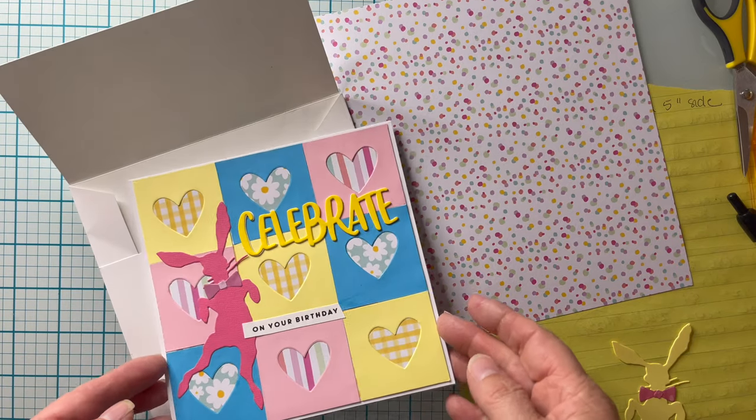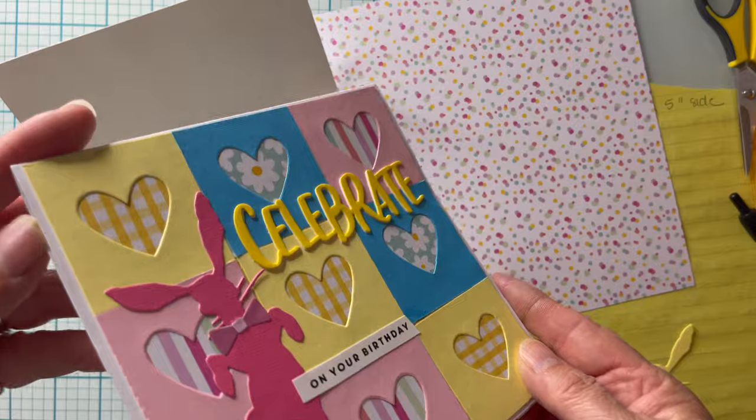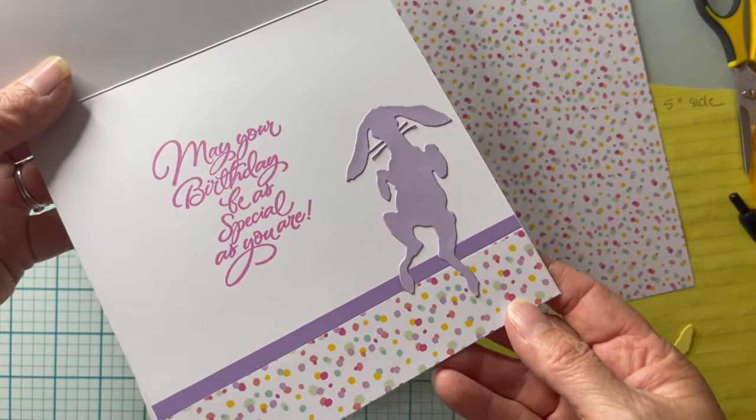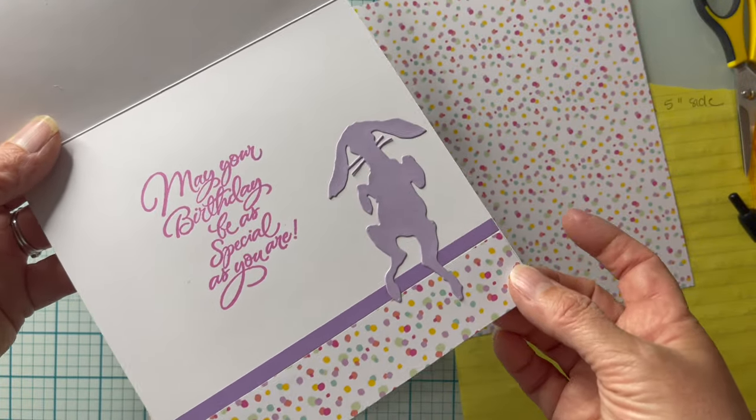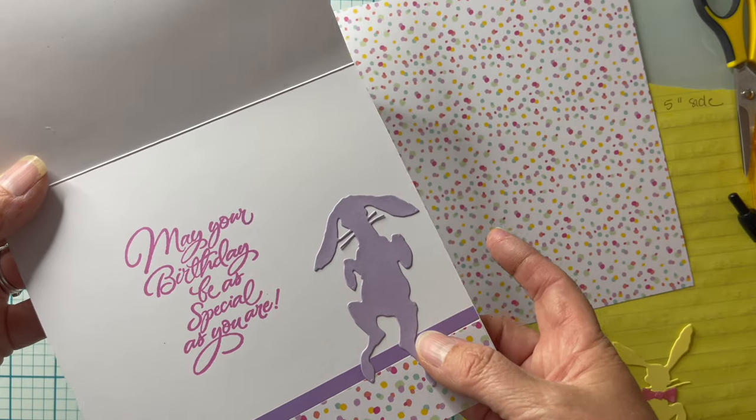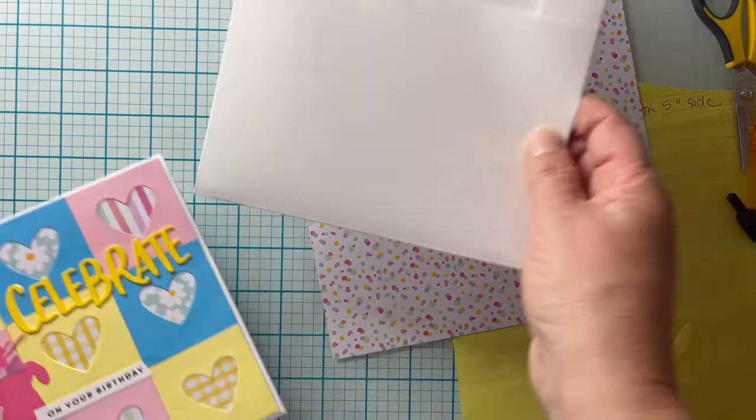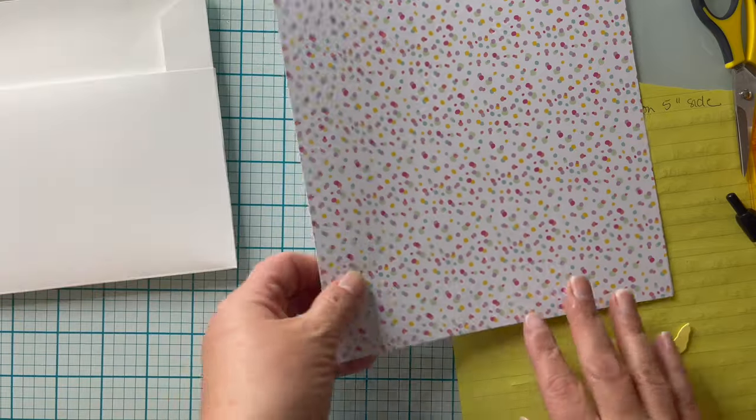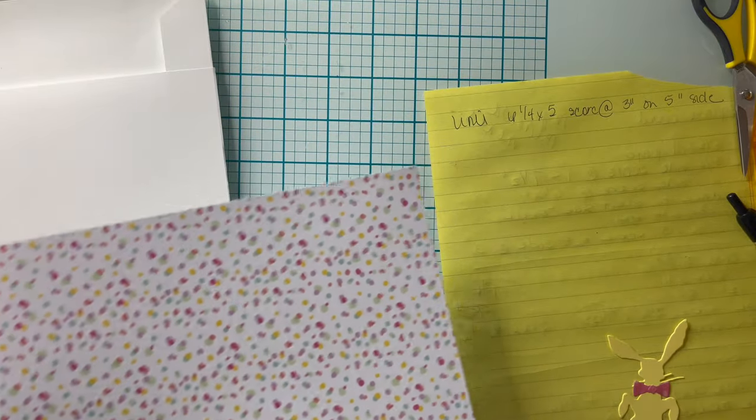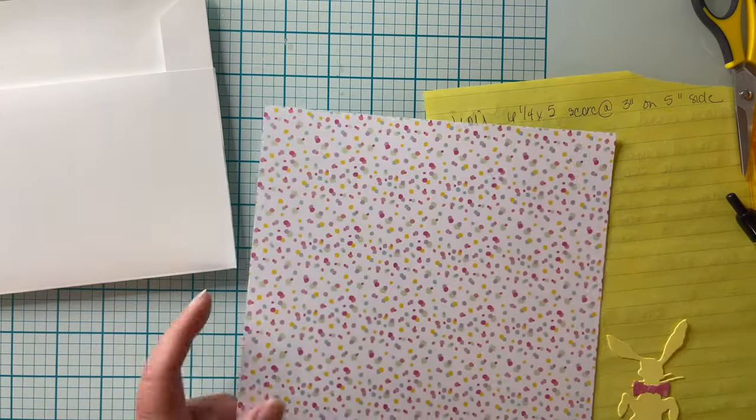Since we finished the inside of the card let's finish the inside of the envelope by creating a liner. Now you'll see that I use this polka dotted paper as well as an extra bunny on the inside of my card. So I've got an extra sheet of that speckled paper and we're going to use that for the inside liner.